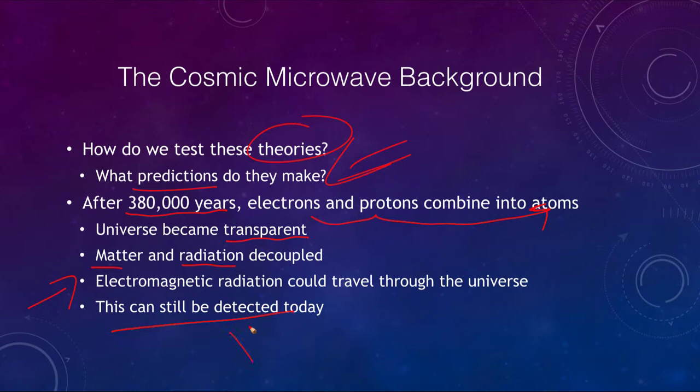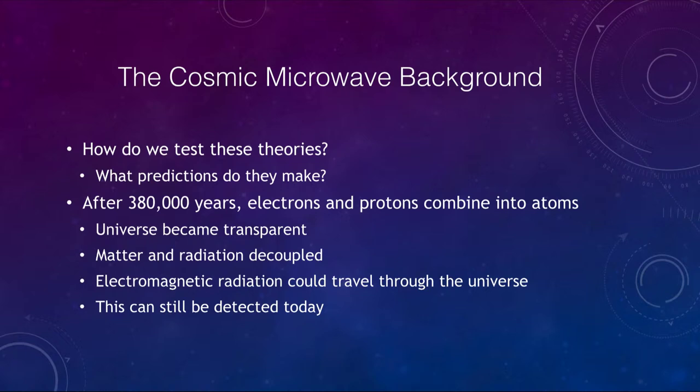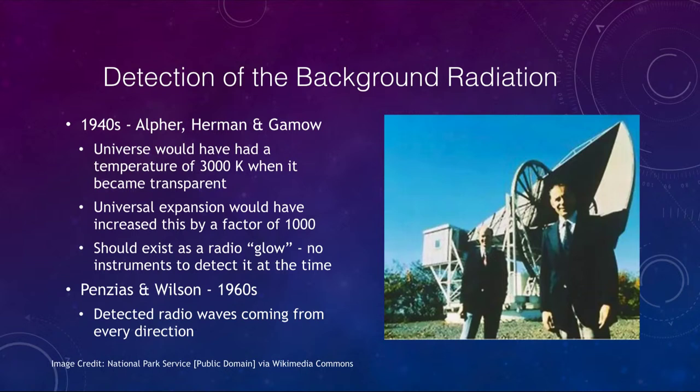This is key because this radiation can still be detected today. Detecting radiation from the early universe would be a very important piece of evidence for the Big Bang. In the 1940s, Alpher, Herman, and Gamow determined that the universe would have had a temperature of 3,000 Kelvin when it became transparent, and that universal expansion would have stretched this radiation.